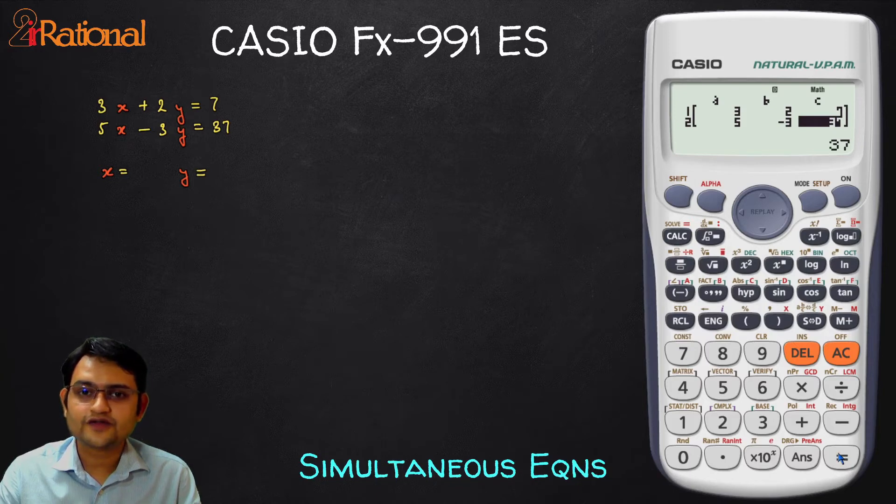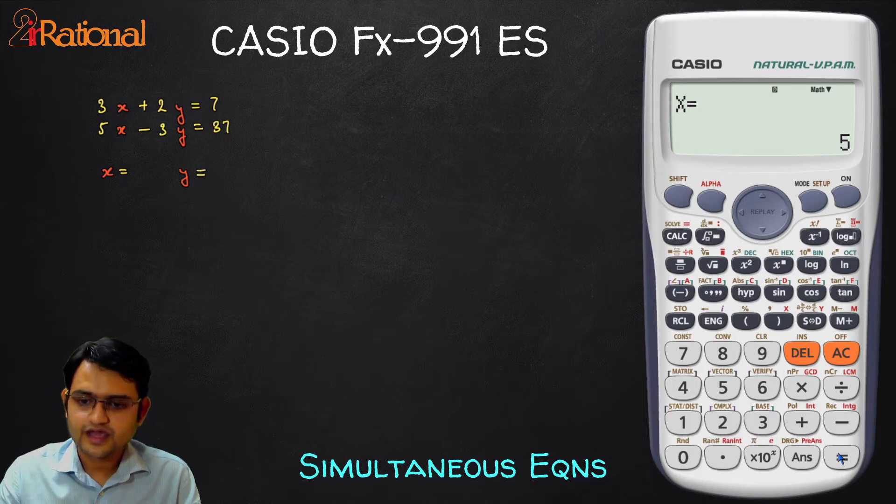After putting in all our values we have to press equal to and we will get x equals 5 and y equals minus 4.